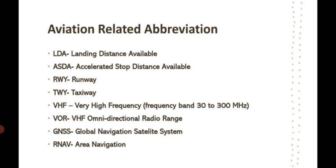VOR is VHF Omnidirectional Radio Range — a navigational aid through which the pilot can get directional information. The aircraft tunes to the VOR and homes in on it; as it moves closer to the VOR the signal gets stronger. GNSS is Global Navigation Satellite System — nowadays navigation is commonly done using satellites. RNAV is Area Navigation — a complex topic that will be discussed later.